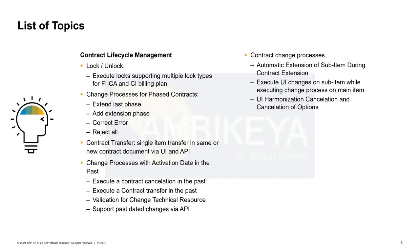Next is contract transfer. The core functionality was already shipped with the last release and we have expanded it so that we can now transfer single items. A contract transfer is used when, for a certain business reason — such as a change of sold-to or other changes requiring the creation of a new contract in FICA — we take the old contract, copy it, and transfer the data including CC data to a new one. What is new in this release is that we can do this not just at the header level for a change of sold-to, but also at the item level, and even within the same contract document.